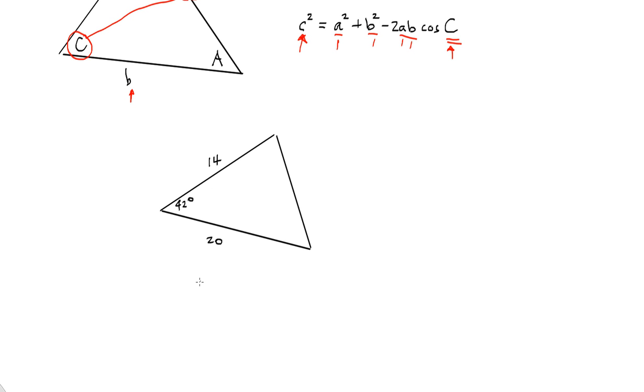So, as you can see, I hope we have a side-angle-side situation. A situation where we have two sides, 14 and 20, and the angle that's included between them, the 42 degrees. So as I said, the first thing we're going to do is we're going to use this formula.